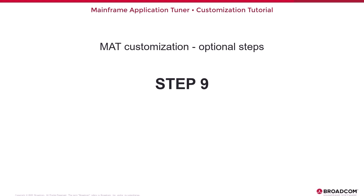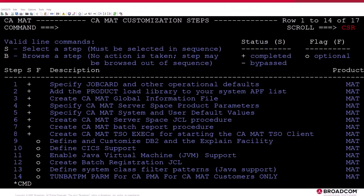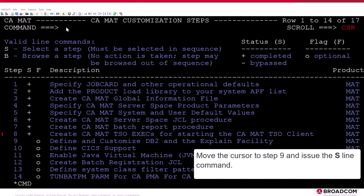Step 9: Define and customize DB2 and the EXPLAIN facility to enable DB2 measurements. In this step, you specify DB2 system information and bind the package and plan to all DB2 systems against which monitors are run. Note: the DB2 system must be active to run this step. Move the cursor to Step 9 and issue the S-Line command.